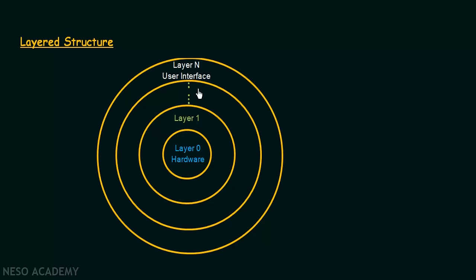One major advantage is that the hardware is protected from the layers above. Unlike the simple structure, the user interface cannot directly access the hardware — it is protected because of all the layers above it. That is one advantage, and we have discussed the disadvantages of this layered structure.